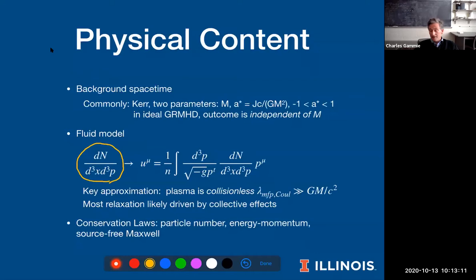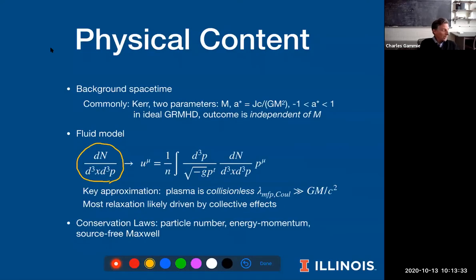It seems likely now that there is relaxation in these flows driven by collective effects — by kinetic instabilities that produce waves and the particles scatter off of those waves, at least relaxing toward a thermal distribution. This is an important approximation, and for applications in low accretion rate black holes, it hasn't been fully justified yet.